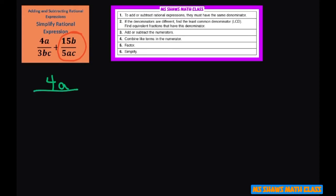We have 4a divided by 3bc plus 5 goes into 15 three times. So this is going to be 3b divided by ac.